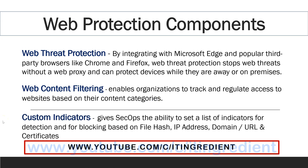The final component of web protection is custom indicators. Indicators of Compromise, that is IOC, is an essential feature of every endpoint protection solution. Leveraging custom indicators, the organization's security operations team can define custom indicators for detection and for blocking. They can define custom indicators either based on file hash, IP addresses, URL or domains, and even on certificates.